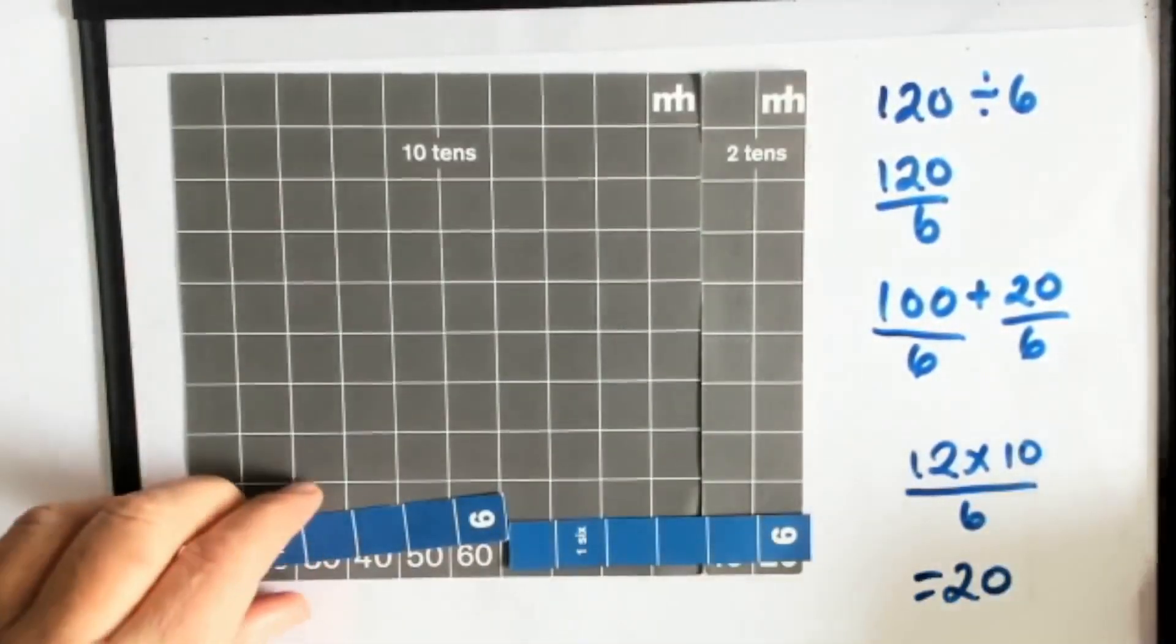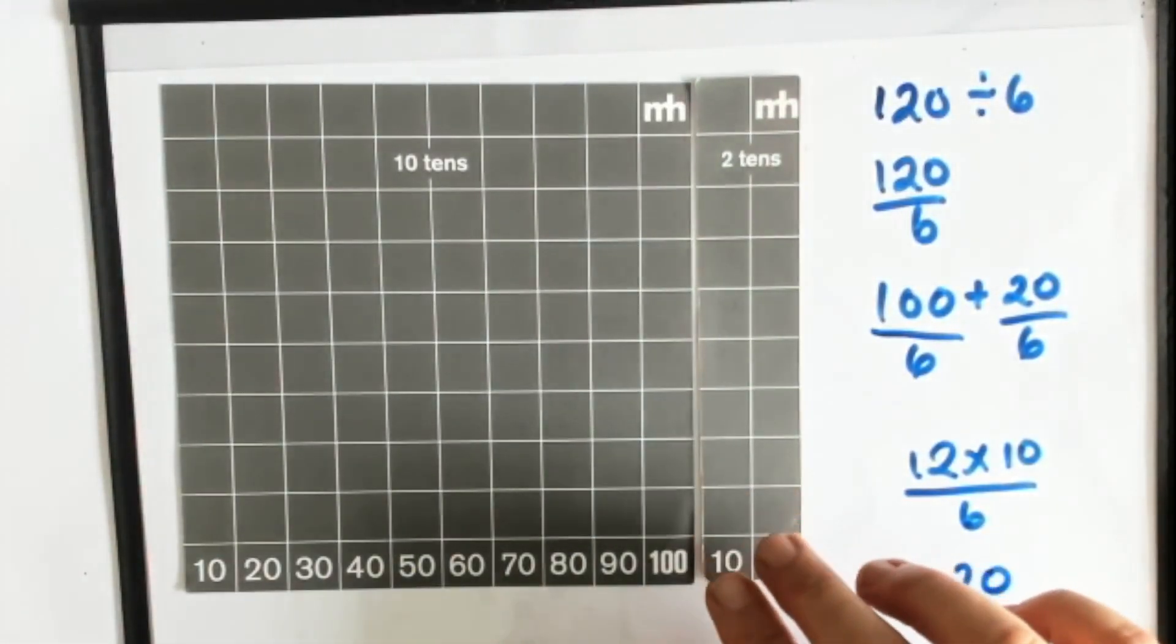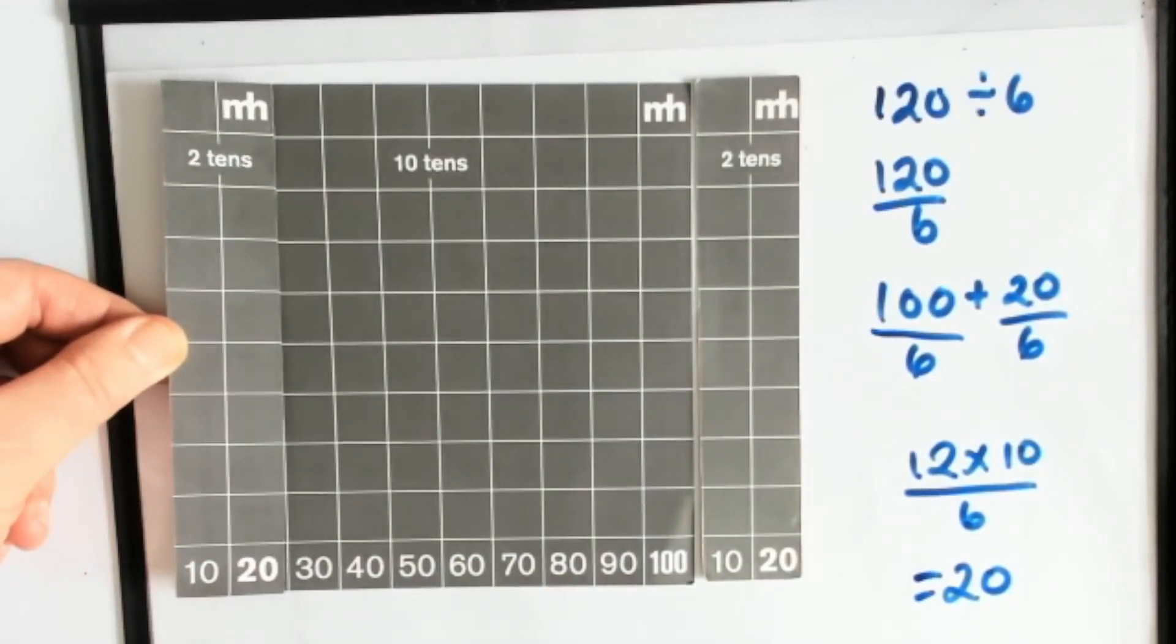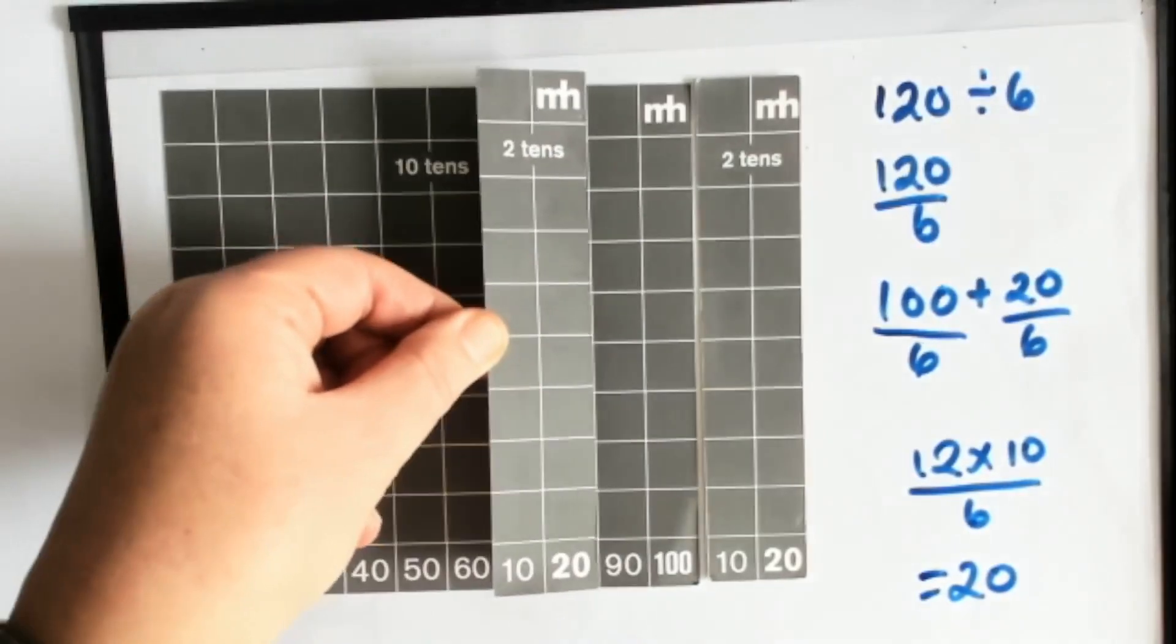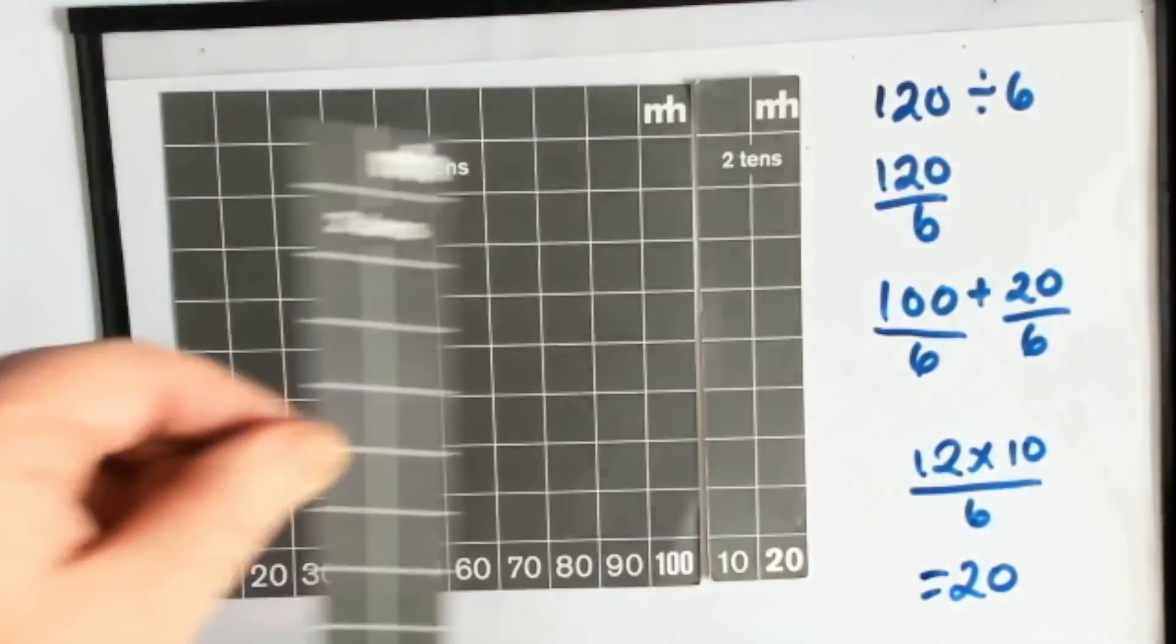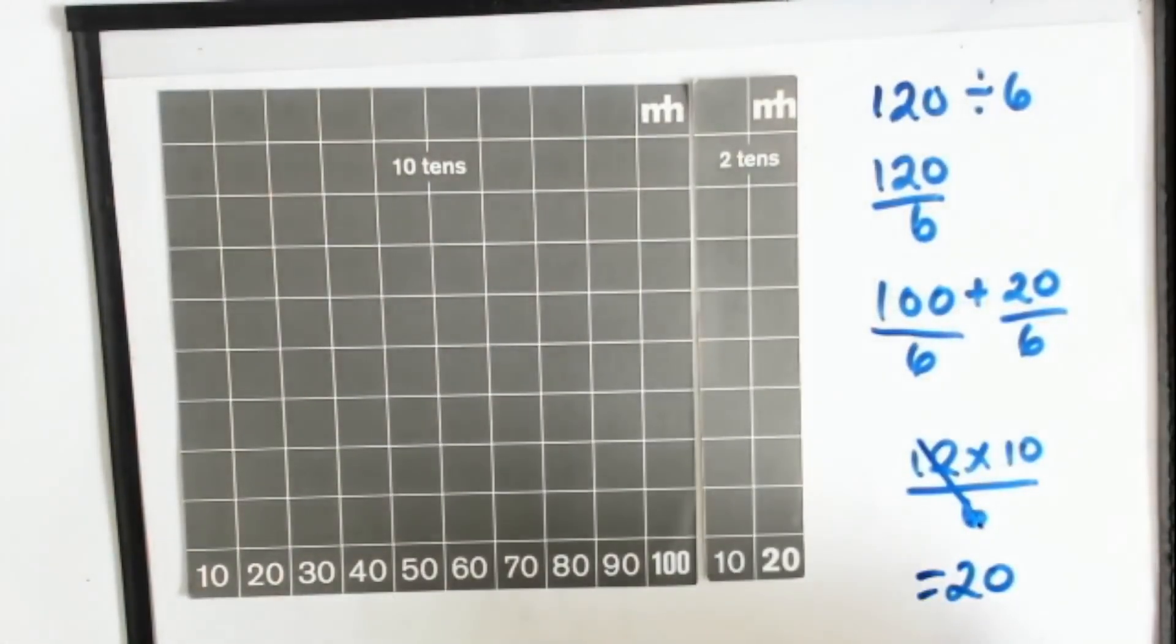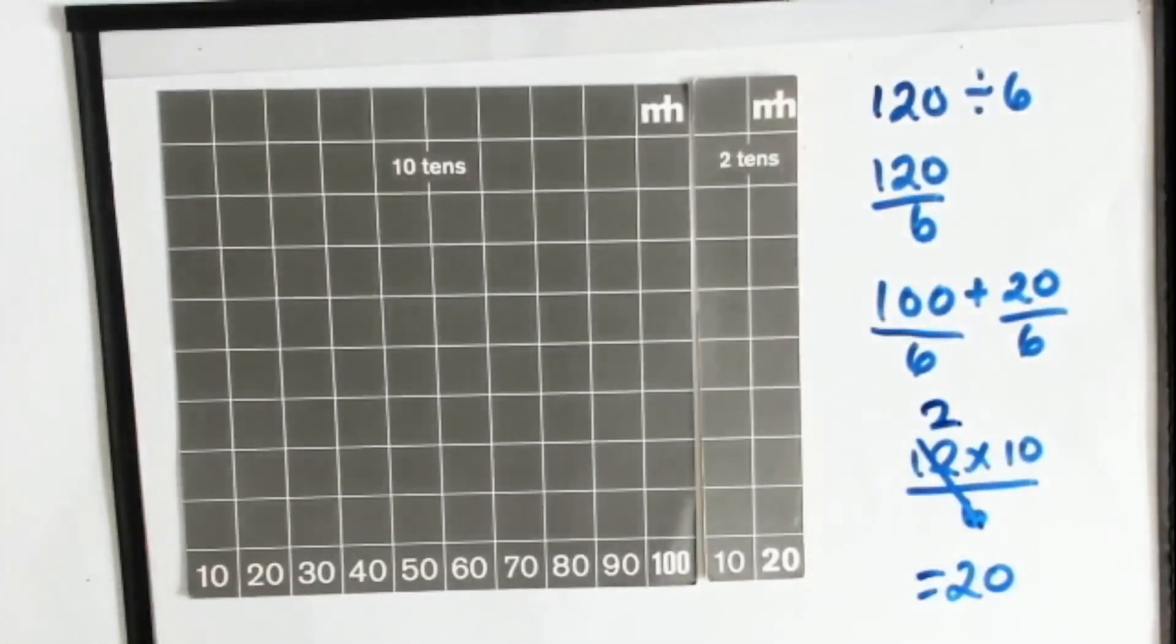Likewise, I may be able to see it and say, well, what size group would fit into 120 six times? And that would be a group of size twenty, two tens. So one, two, three, four, five, six. And so we're asking students to see that twelve divided by six is two and two times ten is twenty.